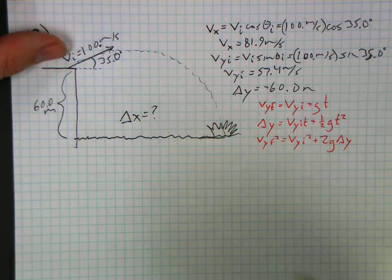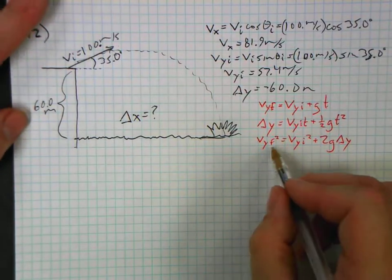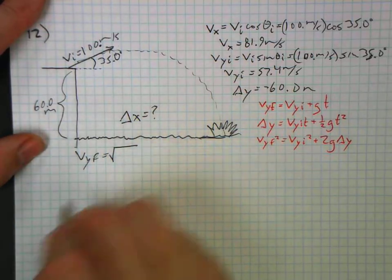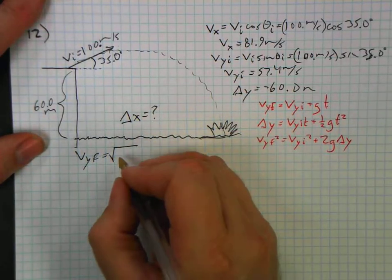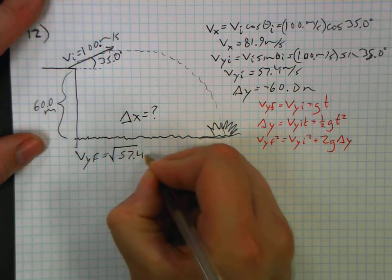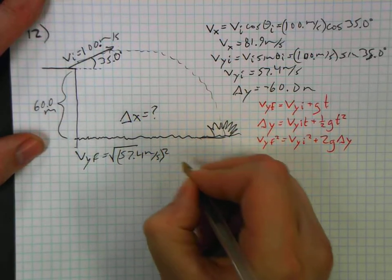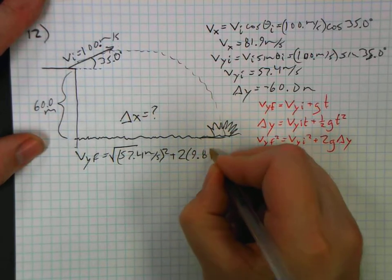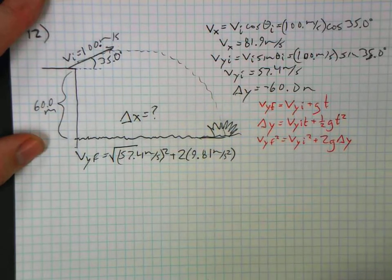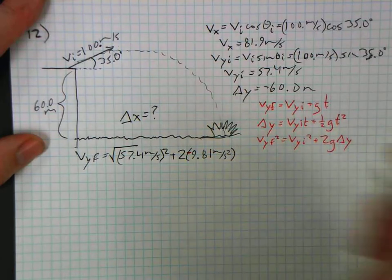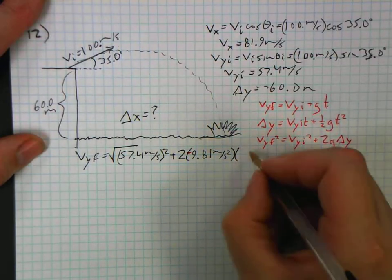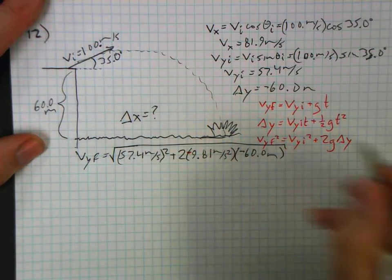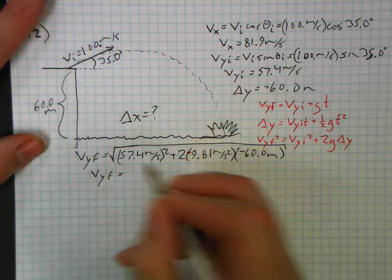So for this one, I'm solving for v y final. V y final is equal to the square root of v y initial squared—so that's 57.4 meters per second squared—plus two times g, 9.81 meters per second squared, and that really should be negative, multiplied by my delta y, which is definitely a negative 60.0 meters. Square root all that junk.